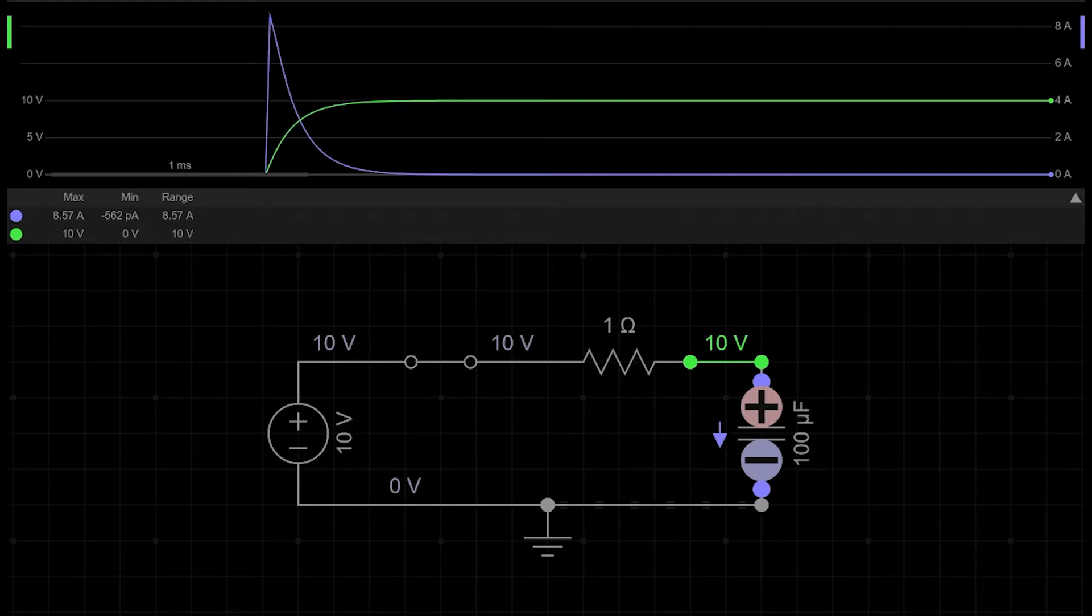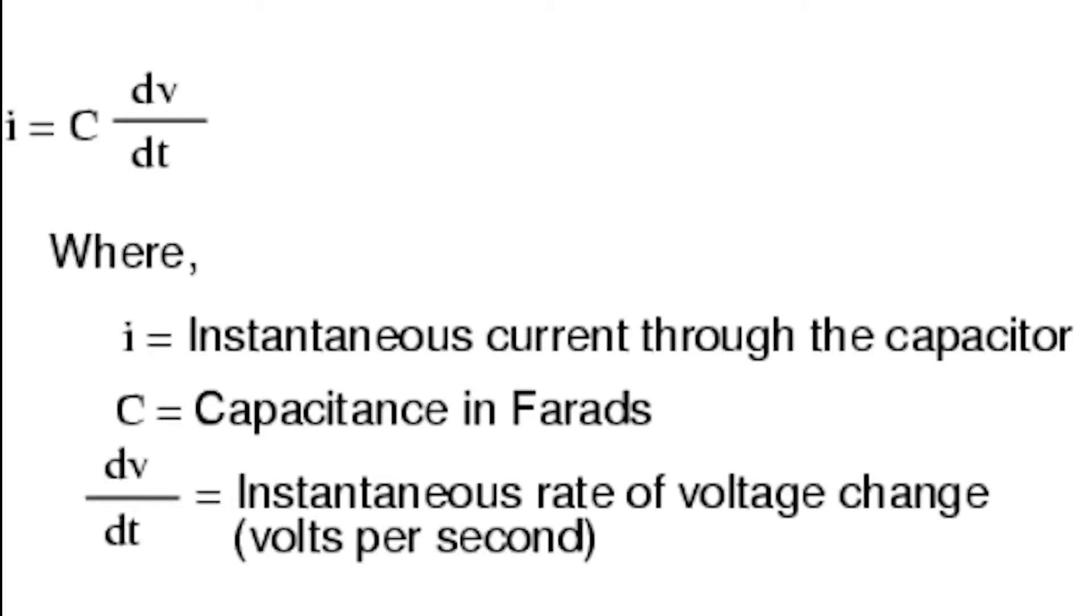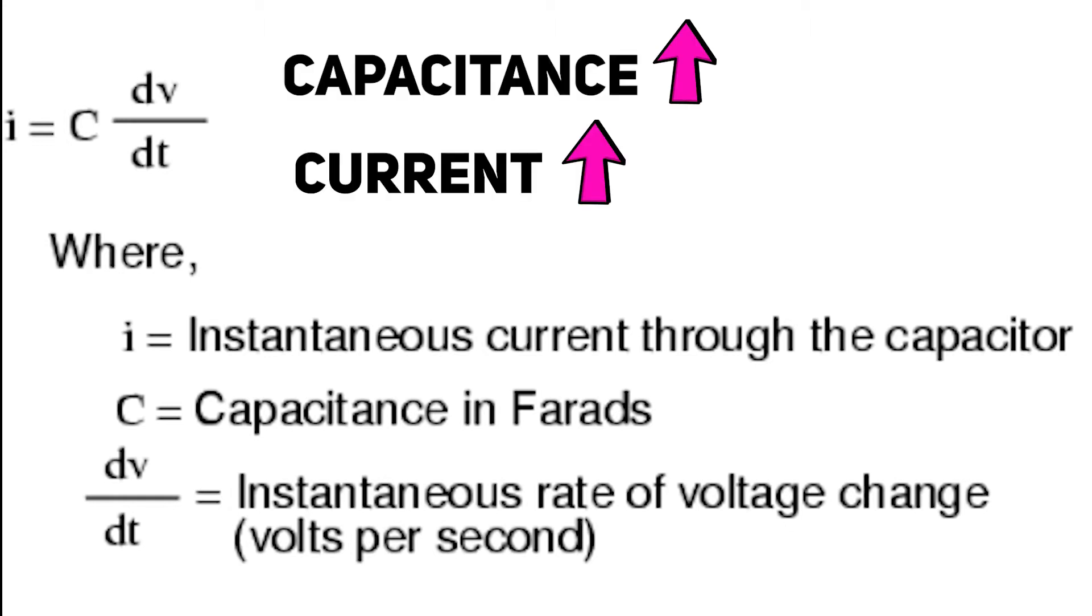The above mentioned can be concluded in the most important capacitor rule. Current through a capacitor is proportional to the voltage change across its plates and its capacitance, and can be written as a formula. Greater capacitance value means higher current. But what interests us more is the second part.